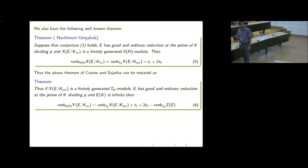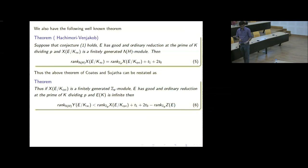Once we have this formula, we can restate the Coates-Sujata theorem: the Z_P·H rank of the fine Selmer over K_∞ is strictly less than the Z_P rank of the Selmer group over the cyclotomic extension plus those extra terms T_0 and T_1. It is the same statement, but reformulated over the cyclotomic extension, so one can now generalize it to the plus-minus Selmer group.